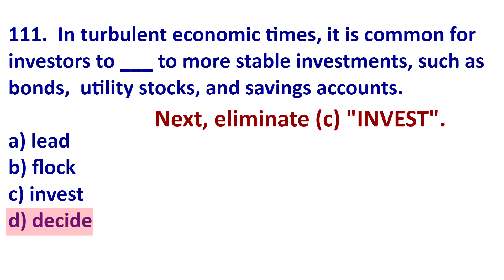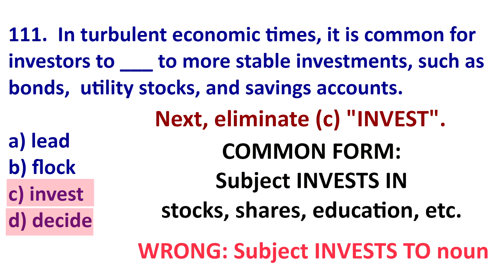Next, eliminate C. The correct collocation is 'invest in' — you invest in real estate, invest in bonds. We don't say 'invest to stock.' We invest in something we hope will make money, so 'invest to' is incorrect here.